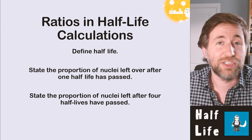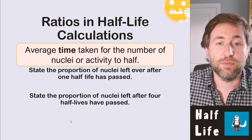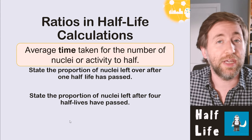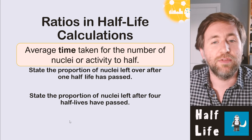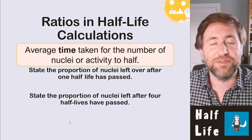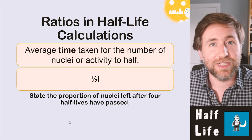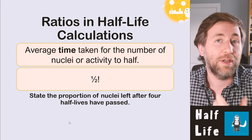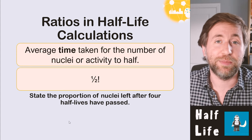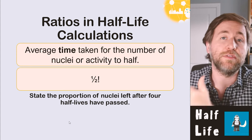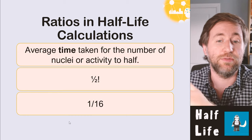Here are three questions to check understanding. First, define a half-life: it's the average time taken for the number of nuclei or the activity to half. Second, state the proportion of nuclei left after one half-life: one half. Third, state the proportion left after four half-lives: after one half-life you have one half; after two, one quarter; after three, one eighth; after four, you have one sixteenth of what you started with.